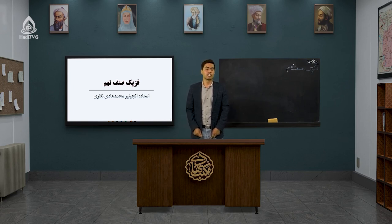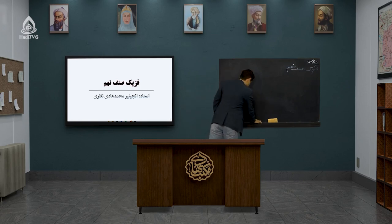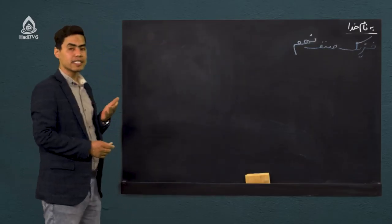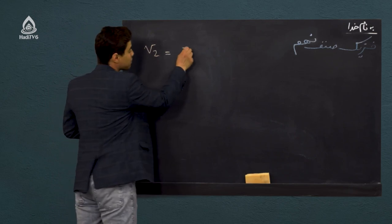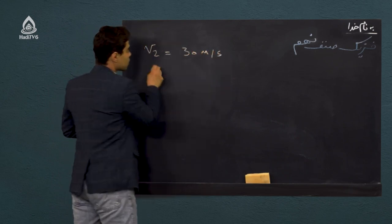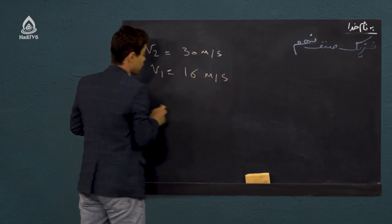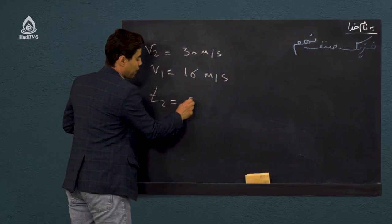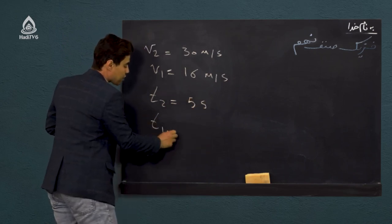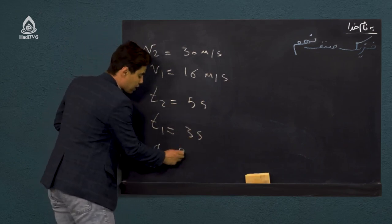یک مثال از شتاب یا تعجیل بزنیم و وارد فصل دوم شویم. فرض کنید که داده‌های زیر به ما داده شده: سرعت نهایی ما ۳۰ متر بر ثانیه، سرعت اولیه ما ۱۶ متر بر ثانیه، زمان نهایی ما ۵ ثانیه، و زمان اولیه ما ۳ ثانیه. با توجه به این داده‌ها گفته شتاب را حساب کنید.